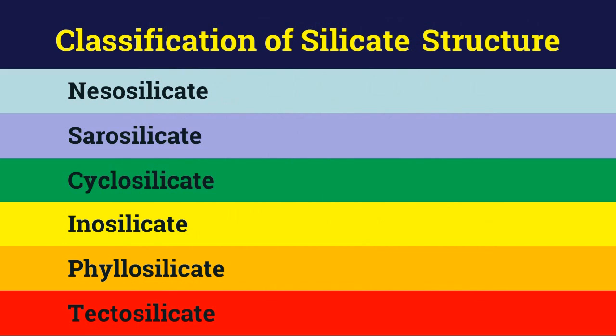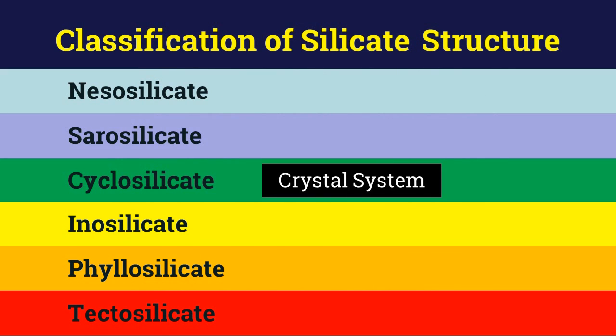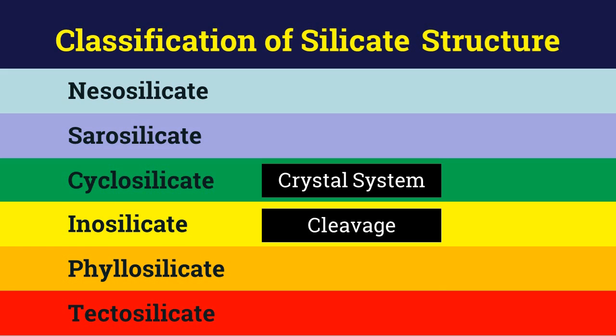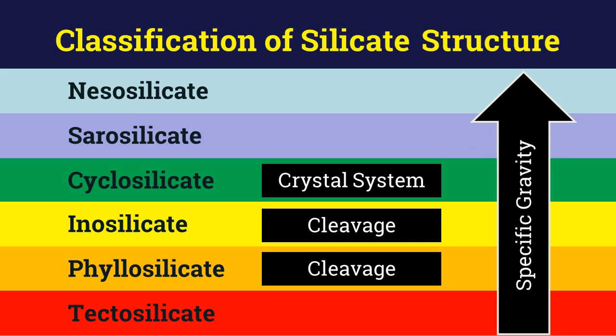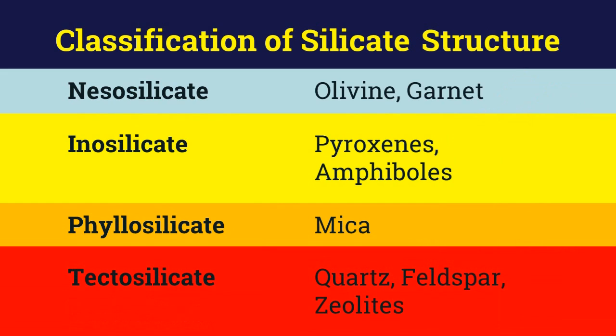These silicate structures control the physical properties of minerals — for example, six-ring cyclosilicates crystallize in the hexagonal crystal system. Decreasing Si:O ratio from tectosilicates to nesosilicates causes a corresponding increase in specific gravity. Also, the structure of inosilicates and phyllosilicates causes them to have pronounced cleavage. Over the next videos on silicate mineralogy, we will be studying the various silicate families based on the classification we just learned, exploring the properties of individual minerals, discussing their occurrences and structures, along with reviewing the most important and common minerals of each family.